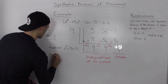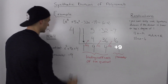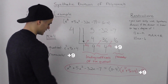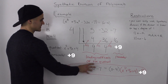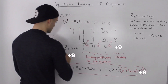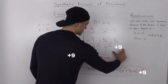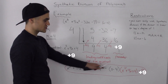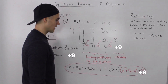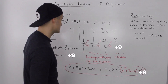Our remainder is negative 9. The result as a division statement: X cubed plus 5X squared minus 32X minus 7 equals the divisor X minus 4, times the quotient X squared plus 9X plus 4, minus the remainder 9. If you compare this answer to the one from the long division overview video, it's the same answer. I'd highly recommend going back to check that video so you can compare both methods and confirm you get the same result.